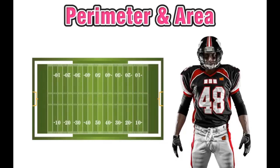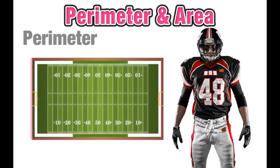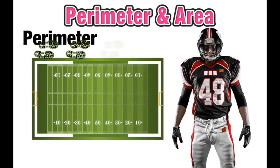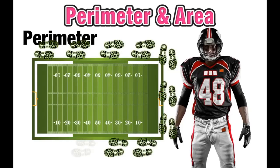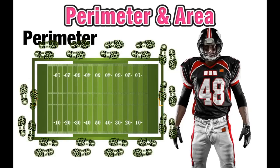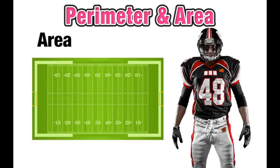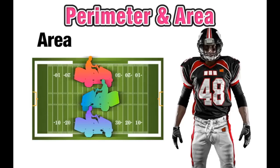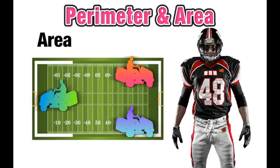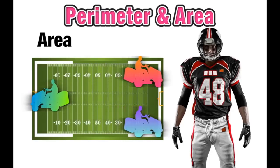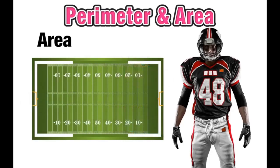On a rectangular football field, we can think of perimeter as how many footsteps it would take you to walk around the entire outside length of the field. While area would be like finding the entire number of square feet that would have to be covered to mow the grass.